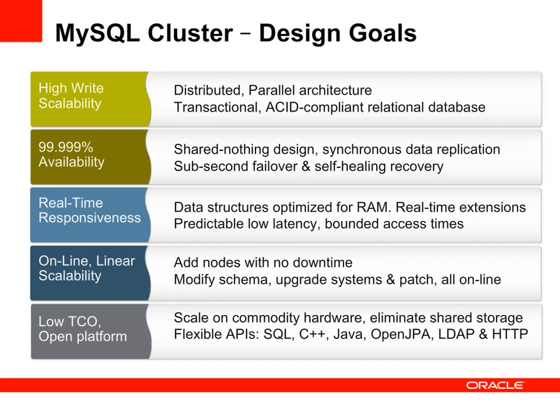The second is five nines availability, which is delivered using a shared nothing architecture, where data is synchronously replicated between data nodes. In addition, we have sub-second failover in the event that a node fails, and that node can automatically be restarted and rejoin the cluster.